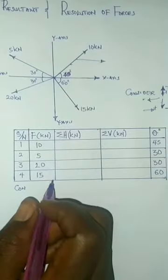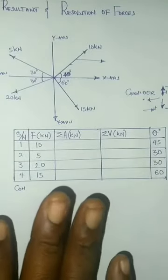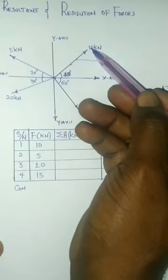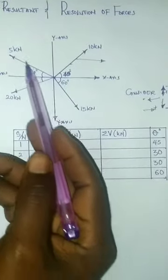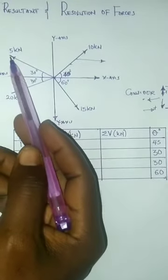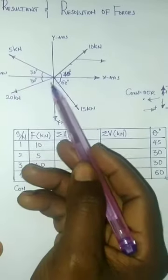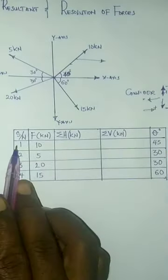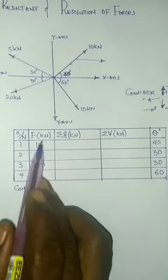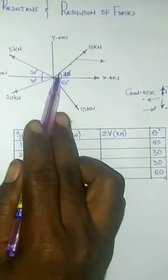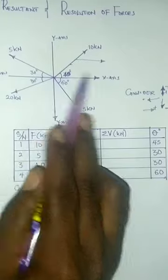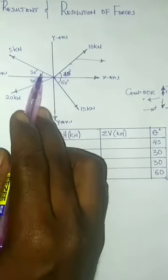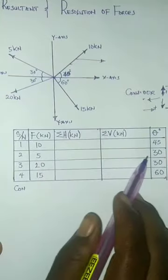As you look at this, we have four forces associated to this diagram. We have force number one, which is 10; force number two, which is 5; force number three, 20; and force number four, 15. Force number one, which is 10, is acting at an angle of 45 degrees to the horizontal. Force number two is 5 newton, acting at an angle of 30 degrees to the horizontal.